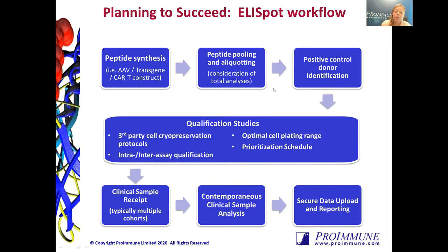There are multiple qualification setups we can perform and several aspects of an ELISpot we can optimize for your particular study. Clinical trials happen all over the world, and blood may be drawn at multiple sites that aren't necessarily where cells are processed. Proimmune will work closely with collection and processing sites to establish a cohesive protocol, because even the tiniest detail — a centrifugation step or the tube type being used — can make a major difference. Once those protocols are established, processing sites can process samples from healthy donors and send those to us as a dry run so we can evaluate the viability and functionality of those cells in the ELISpot, including the cryopreservation, processing, and shipping.